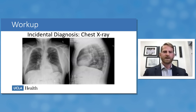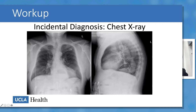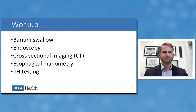A plain chest X-ray is not usually used in the workup of hiatal hernia but can be how a hernia is first diagnosed. On the PA image you can see an air-fluid level behind the heart, confirmed to be retrocardiac on the lateral image. This is pathognomonic for a hiatal hernia and will prompt the rest of the workup.